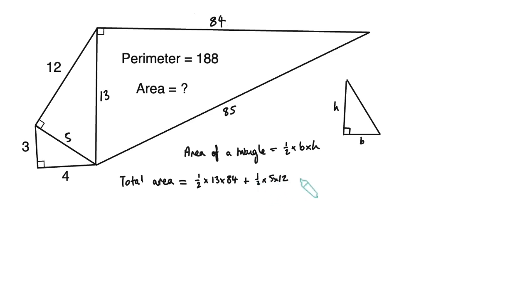the large triangle's area would be a half times 13 times 84, the middle one would be a half times 5 times 12, and the last one would be a half times 3 times 4. So we're going to add all those together, and we're going to get 42 times 13, plus a half of 60, which is 30, and a half of 12 is 6.